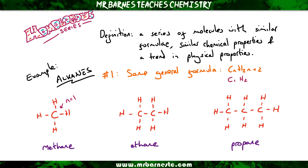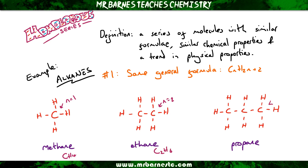So if we look at methane, we've got one carbon. You times 1 by 2, which is 2, then add 2, you get 4, so the formula is CH4. For ethane, we've got two carbons, so you double that to get 4, then add 2, giving 6 — so the formula is C2H6. And then propane has three carbons, you double that to get 6, add 2, giving 8 — so the formula is C3H8.